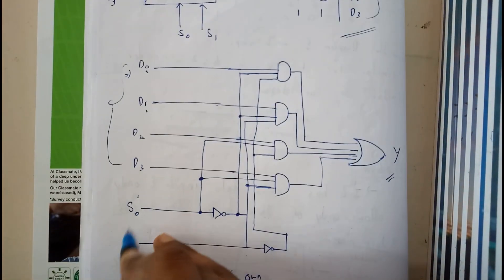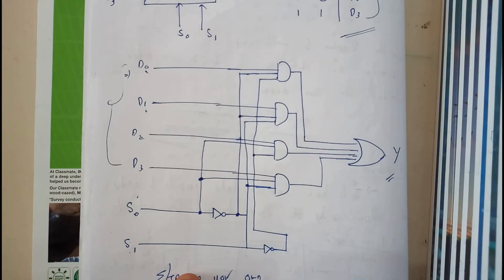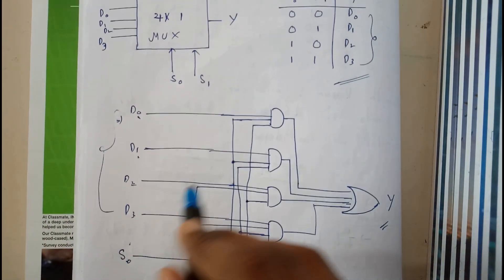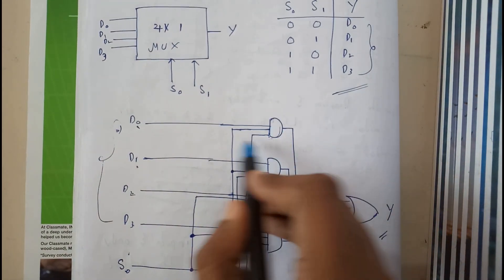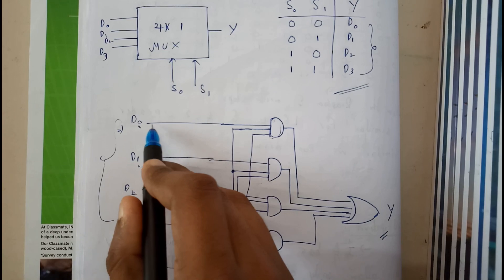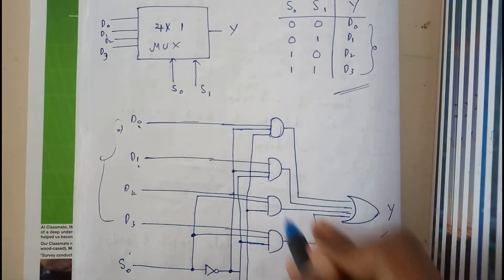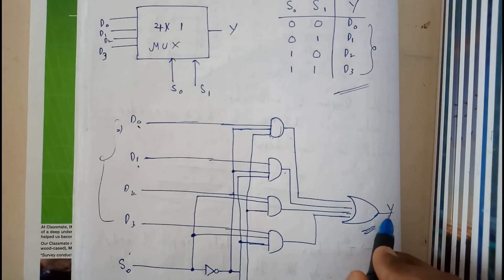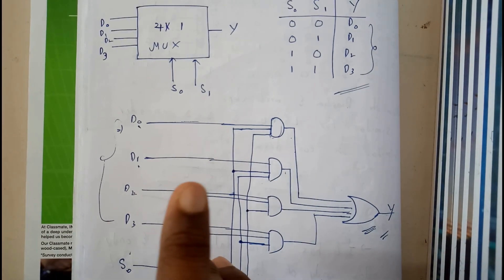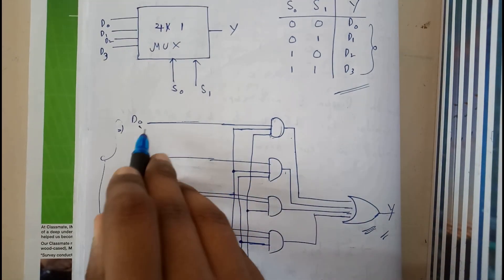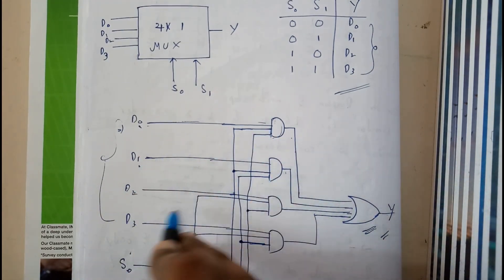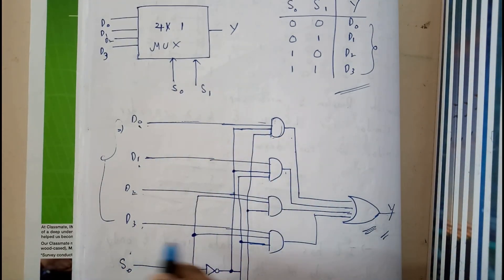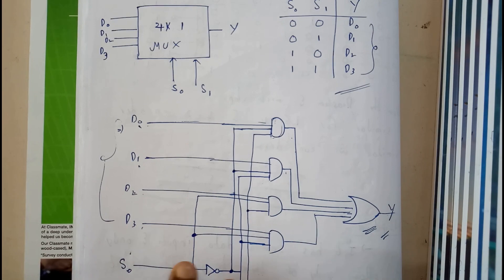We got 4 here and we got 2 selection lines s0 and s1. For this we will be having 4 AND gates, and for all of them we'll be giving to an OR gate so that we get a single output. For each one of them I'll be giving: for the first one d0, for the second one d1, for the third one d2, for the fourth one d3.